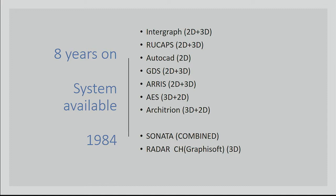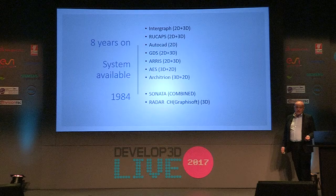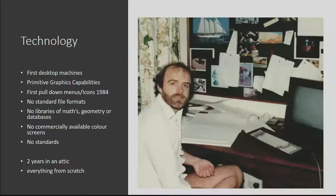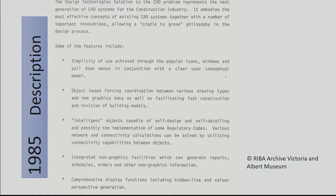Eight years on, we moved to the systems that were available then. CAD is taking off somewhat, but there are no integrated systems. Sonata was just starting in 1984, and Graphisoft — or Radar, which was a pre-version of Graphisoft systems — was just getting underway as well. That's how it looked: first desktop machines, primitive graphics capabilities, no standard file formats. The first pull-down menus were just available then, although in this system I had to program more myself. Two years in an attic, everything from scratch. This document is in the RIBA archive at the V&A.